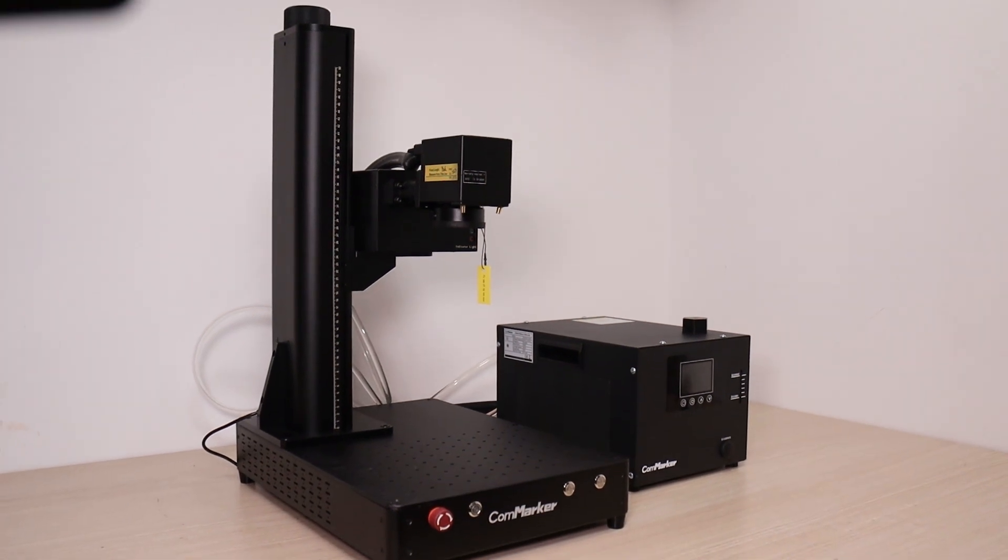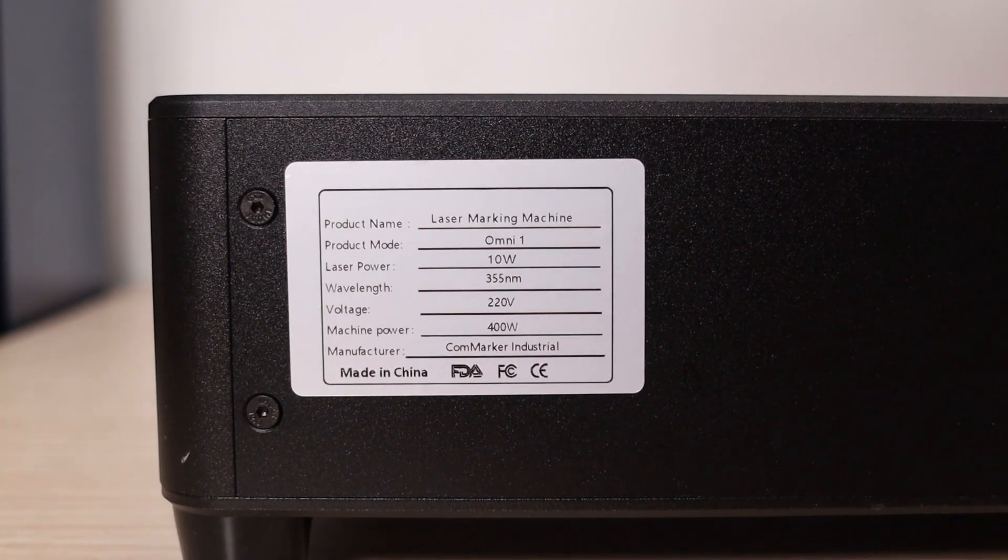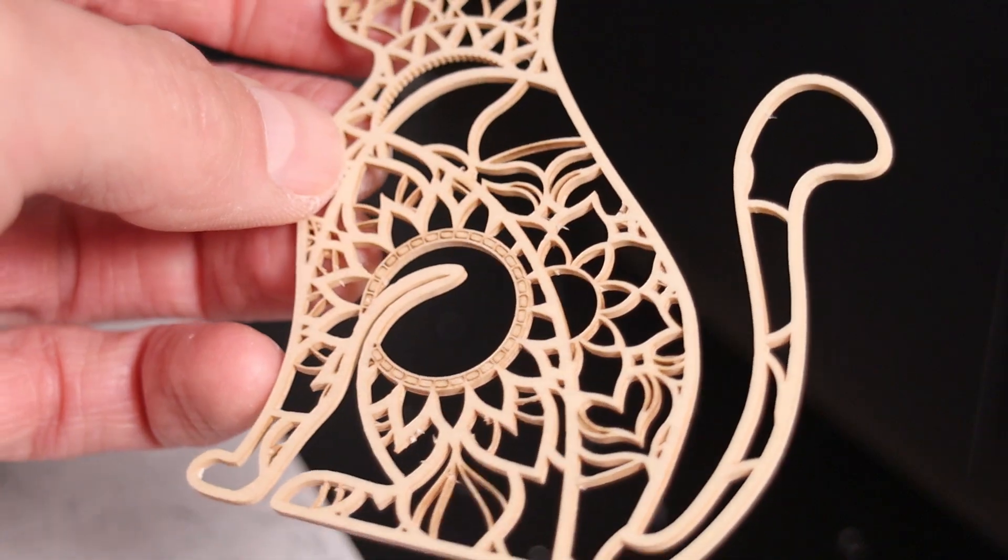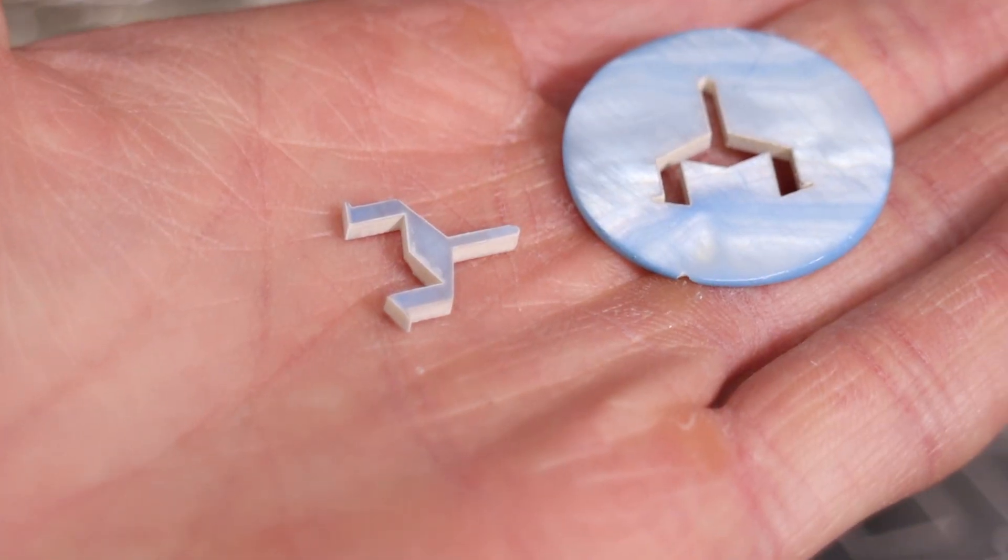In this video, we'll be taking a look at the 10-watt version of the CommMarker Omni. This is a highly capable UV laser that can engrave nearly all types of materials, something no other laser type can achieve.